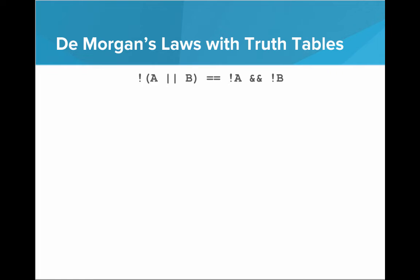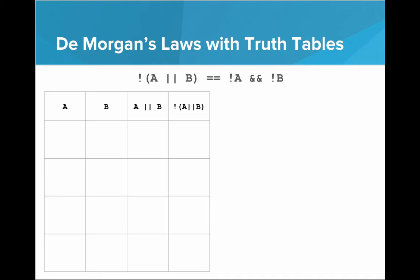Now let's prove that NOT (A OR B) equals NOT A AND NOT B. For the left side, the combinations are true/true, true/false, false/true, false/false. A OR B gives true, true, true, false. Taking the opposites: NOT (A OR B) = false, false, false, true.